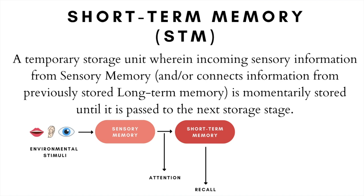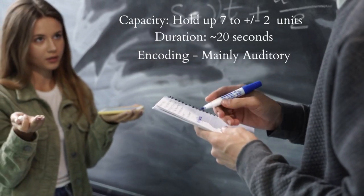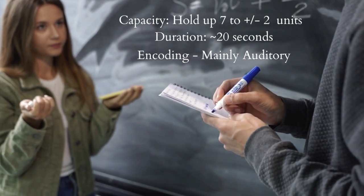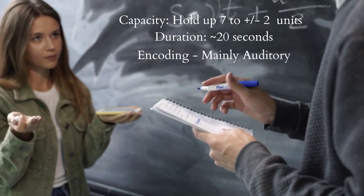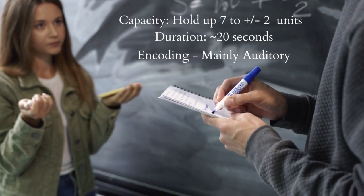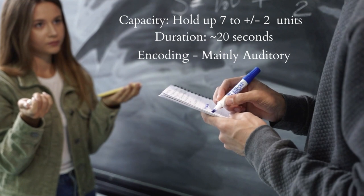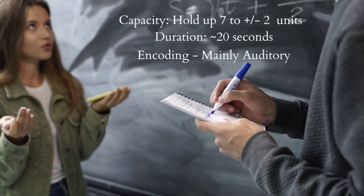Moving on, the next stage is the short-term memory, also called the STM. The STM is a shorter, temporary storage unit that receives its inputs from either the sensory memory or from the LTM via retrieval. The STM also acts as a gateway for transferring information to the LTM. In terms of capacity, the STM has a limited capacity and can hold approximately 7 ± 2 items — that is, ranging from about five to nine items — with seven items being the average capacity.